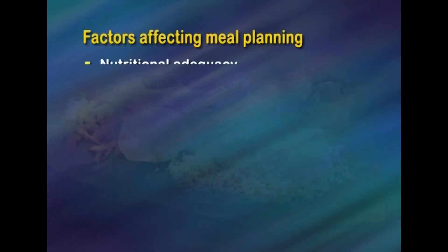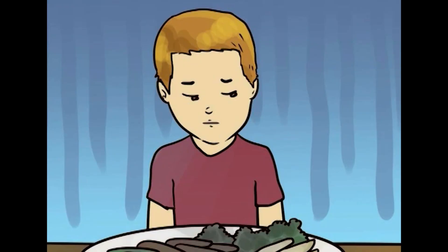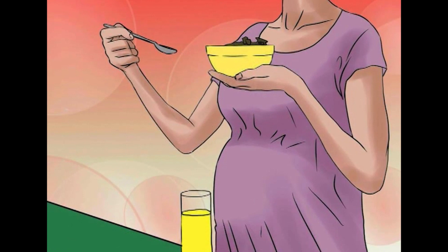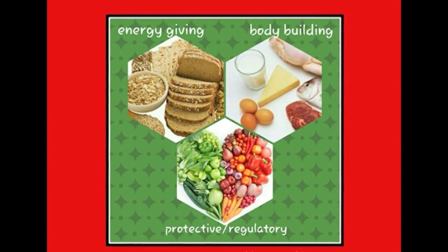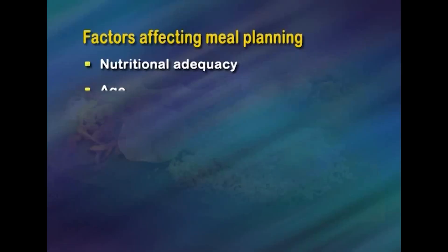Factors affecting meal planning: Nutritional adequacy is the most important factor, which means that the nutritional requirements of all family members are fulfilled. For example, a growing child needs more protein, and a pregnant and lactating woman needs more calcium. While planning meals, one should include food items from various food groups — energy-giving foods, body-building foods, and protective and regulating foods.